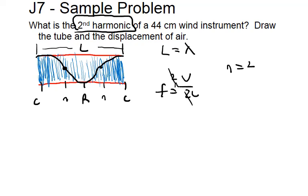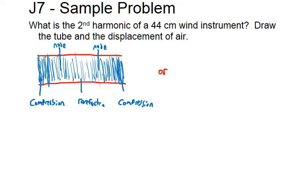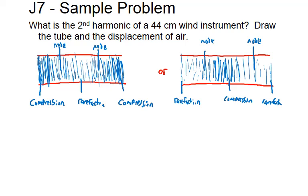That makes sense because L equals the wavelength here, so v = frequency × λ gives frequency = v / L — exactly what we get with n = 2. Drawing this out: compression, node, rarefaction, node, compression — or starting from a trough, coming up to a crest and back down. L equals the wavelength whether measured trough-to-trough or crest-to-crest.